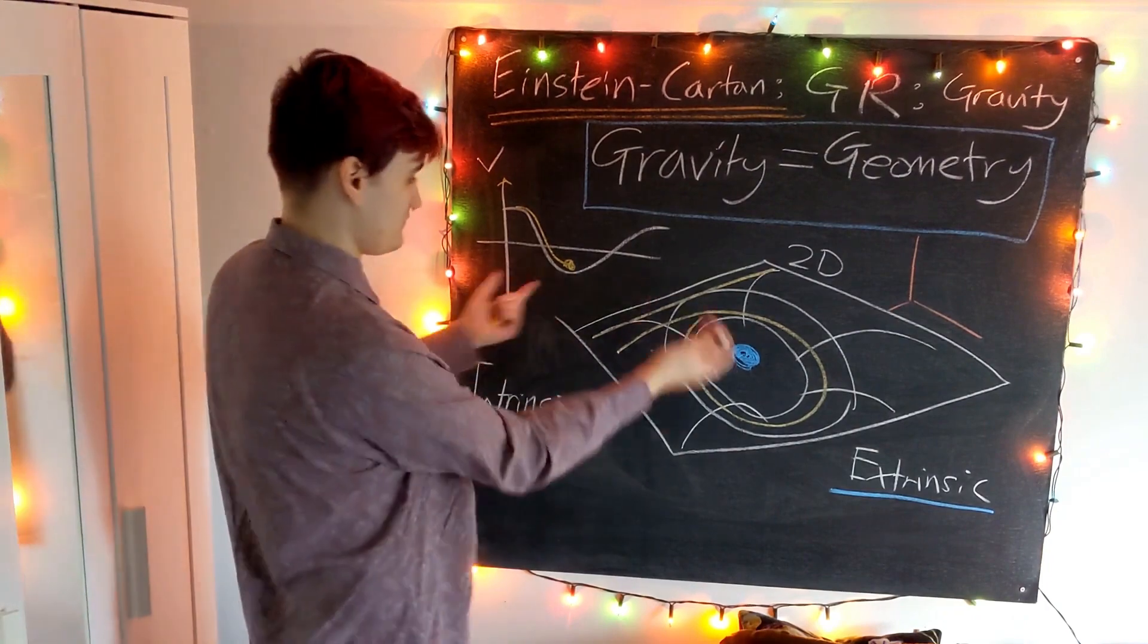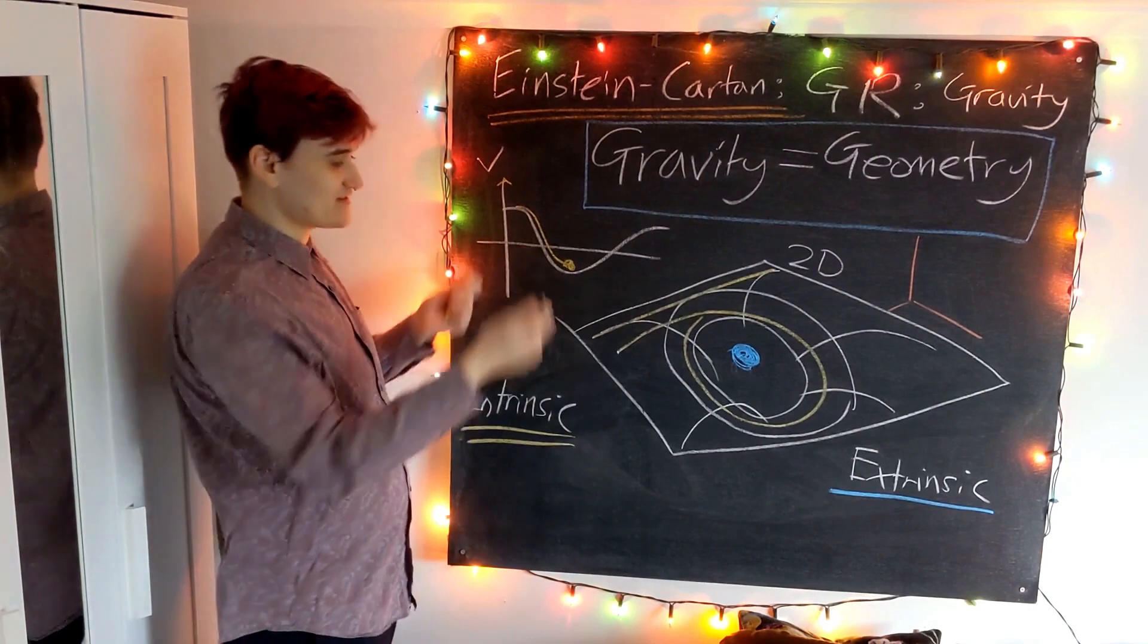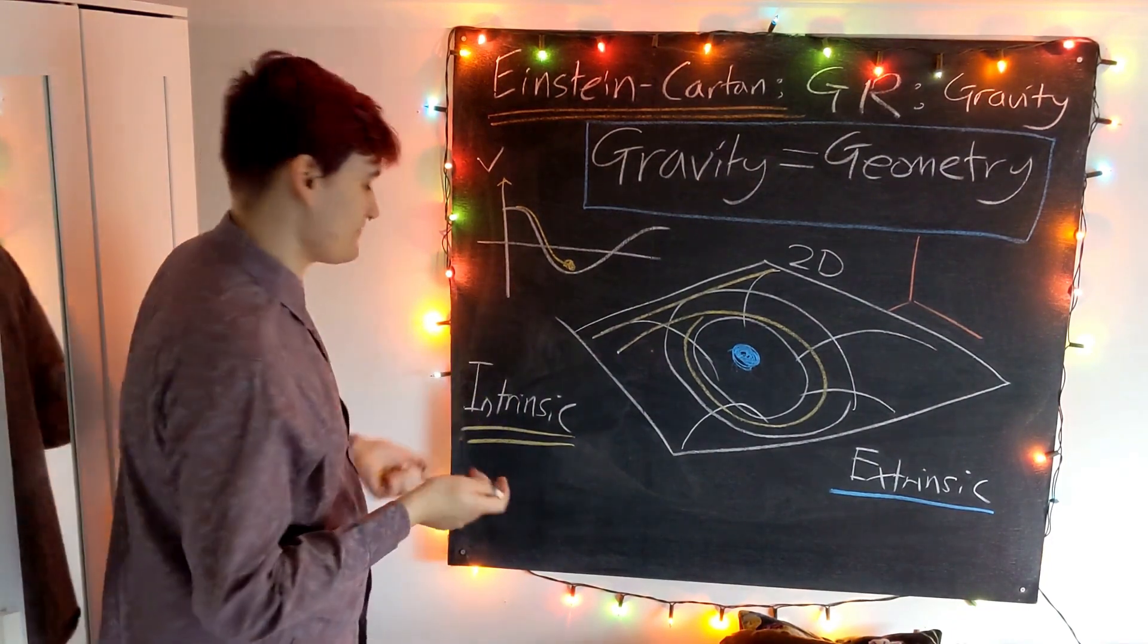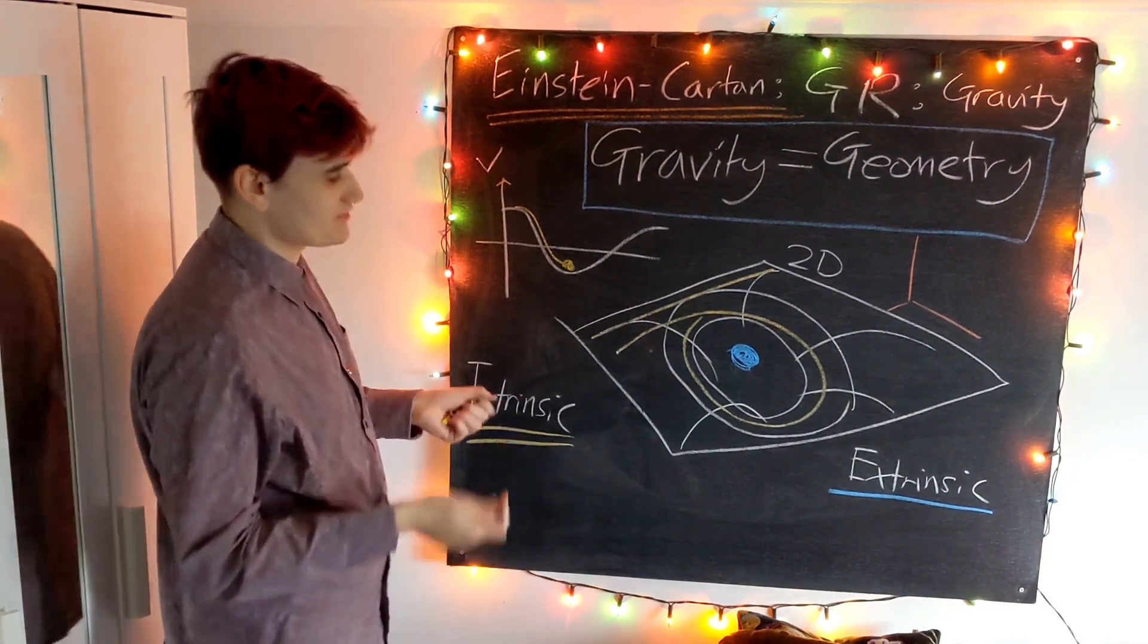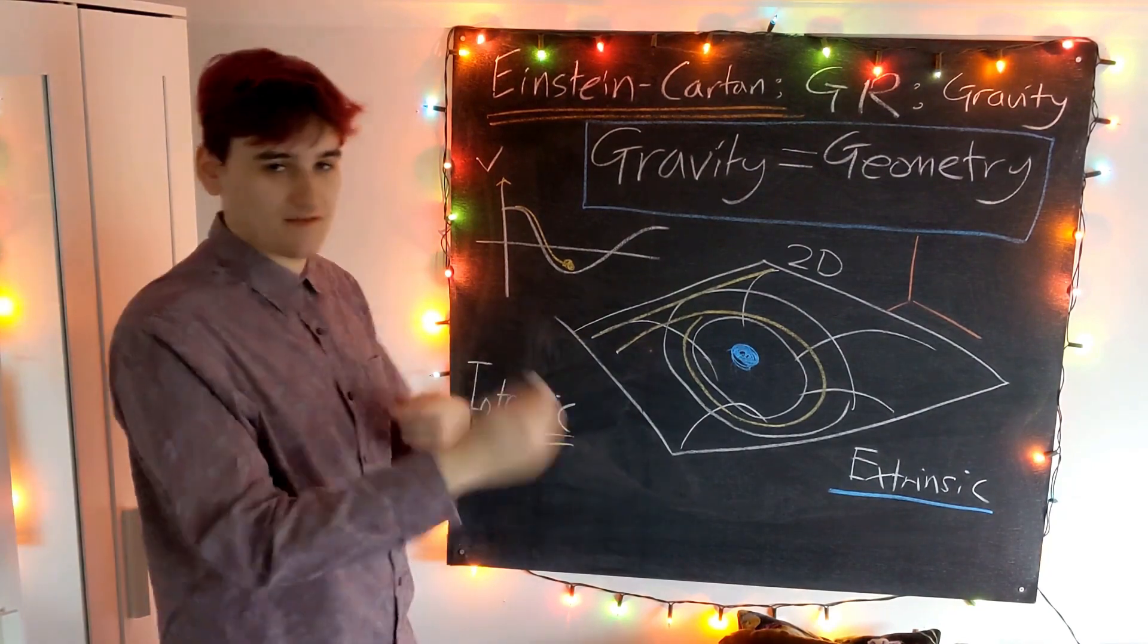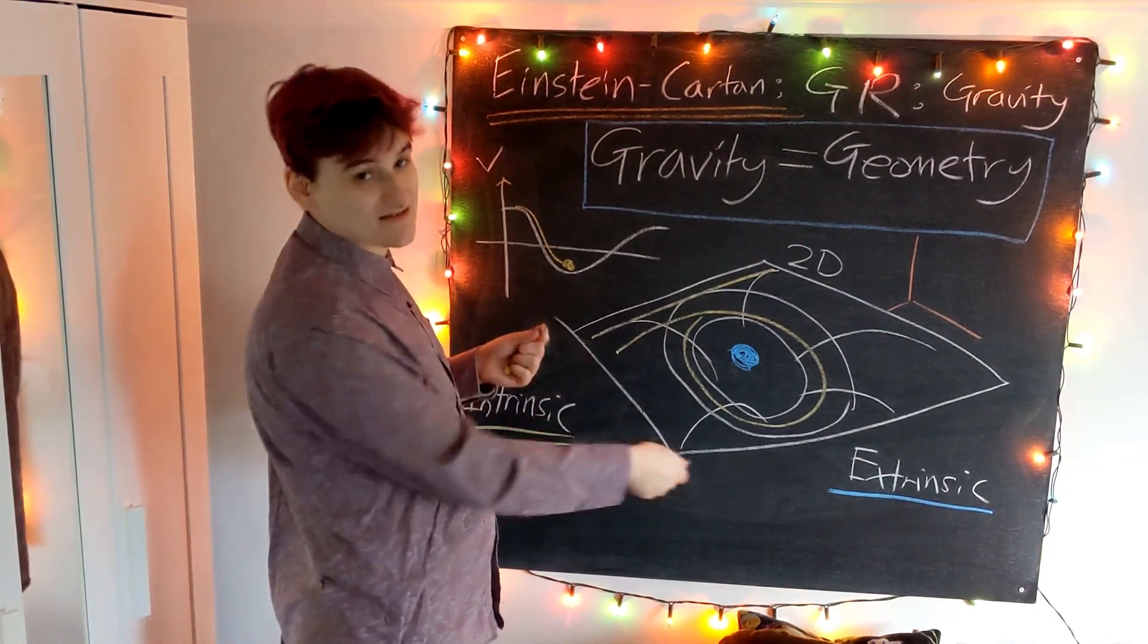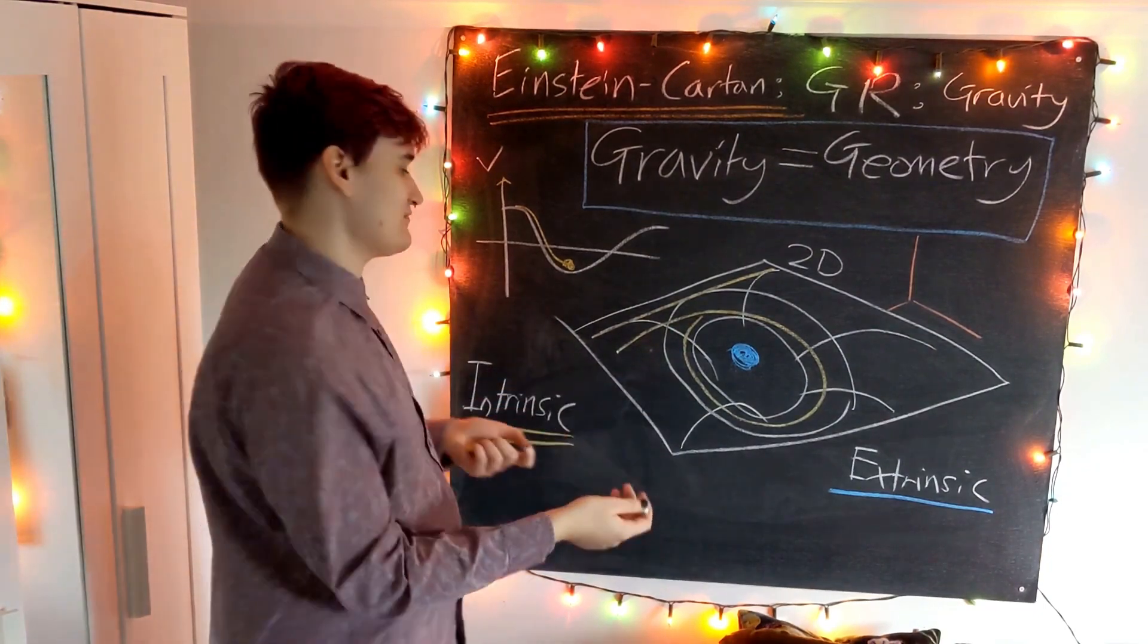This is different to extrinsic curvature because intrinsic curvature is measurable by people or entities that reside in the spacetime itself. If the spacetime is intrinsically curved, that's going to be noticeable by observers that move within that spacetime. This is where it's useful in general relativity: observers that live in spacetimes can measure intrinsic curvature, and that's what tells them there's some gravitational effect that they need to respect.